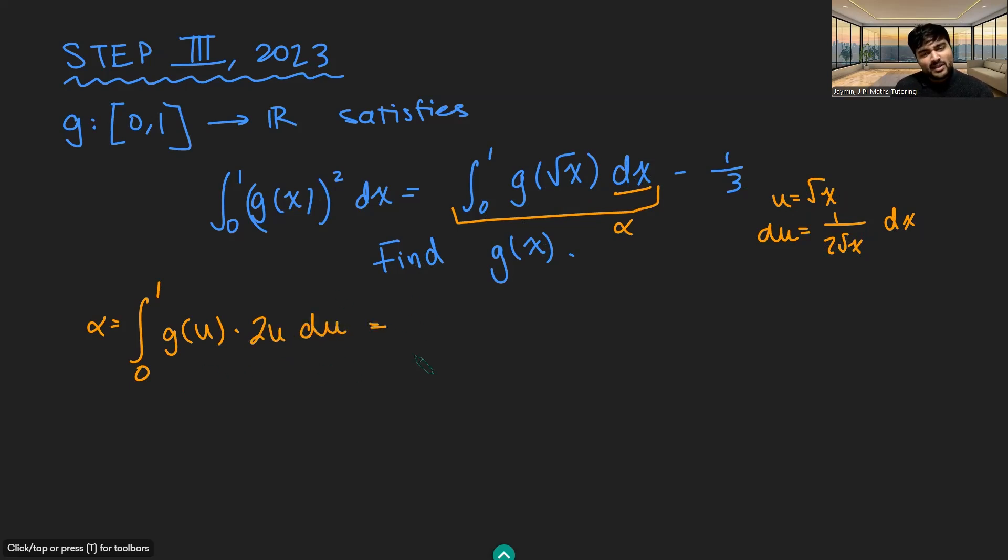And now what I'm going to do is just replace the u's with x's. So this is the integral from 0 to 1 of 2xg(x) dx. And you might ask, how can I do that? Why am I allowed to do that? Well, fundamentally here, u is just a dummy variable. Because we've got a definite integral, if I was to evaluate this, I'd find the antiderivative and then sub in 1 and sub in 0. That's exactly what I'm going to get if I find the antiderivative of this integral and then sub in x is 1 and x is 0. So these two are 100% the same thing.